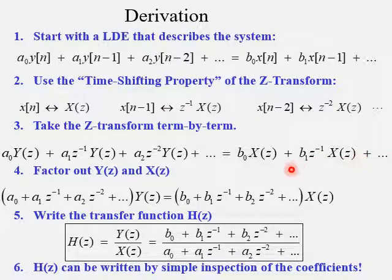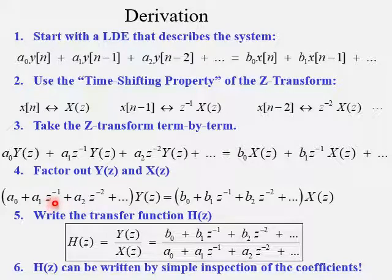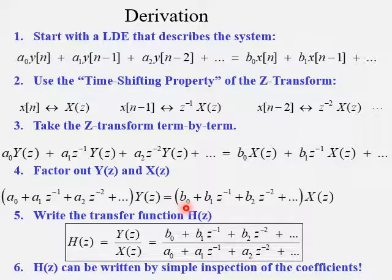At this point, we have just an algebraic expression. Notice on the left side, every term has the same Y of z, so we can factor out Y of z. What's left are just the coefficients — a0, a1, a2, and so forth — multiplied by their time-shift factors: a1 has z to the minus 1, a2 has z to the minus 2, and so on. Likewise, on the right side, we factor out X of z, leaving the b coefficients: b0, plus b1 times z to the minus 1, plus b2 times z to the minus 2, etc.